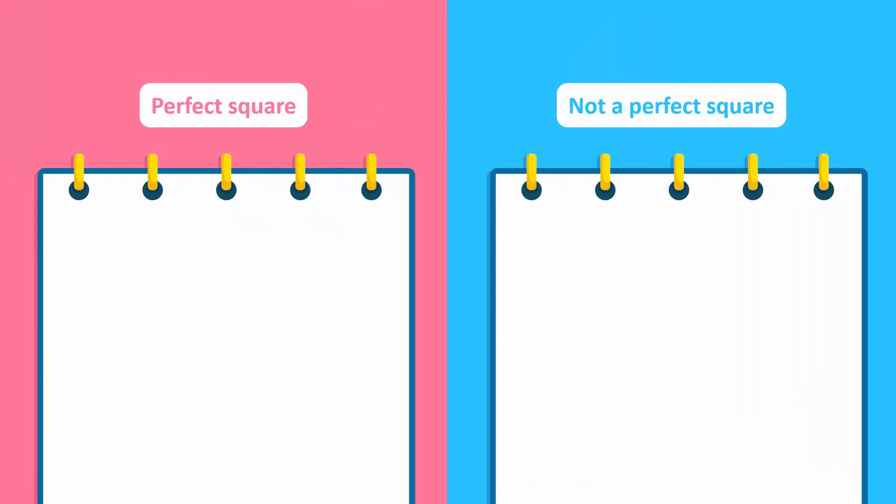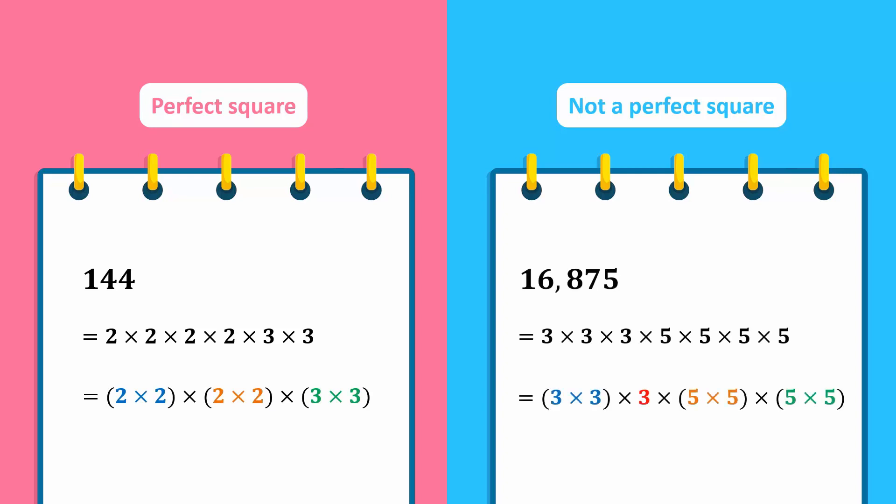Therefore, to see if a number is a perfect square, first we list down all its prime factors, and then determine if all the factors can be paired up. If not, it is not a perfect square.